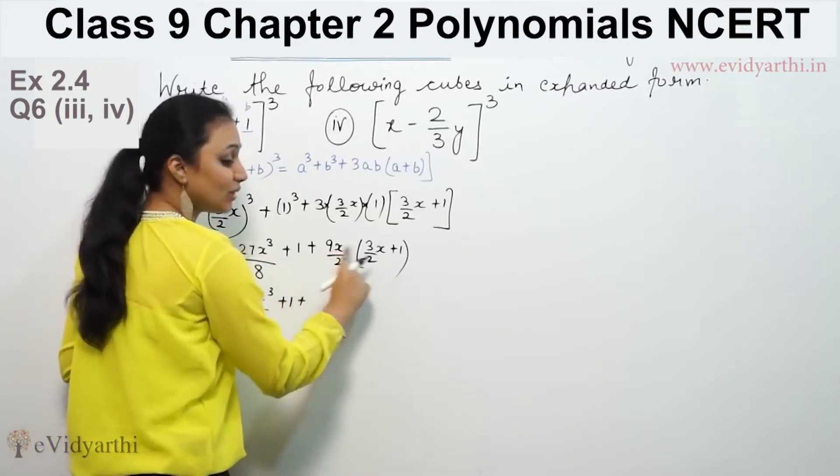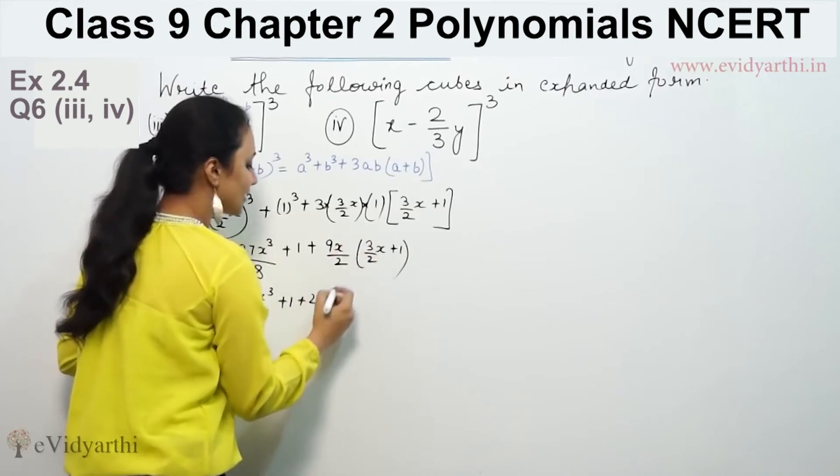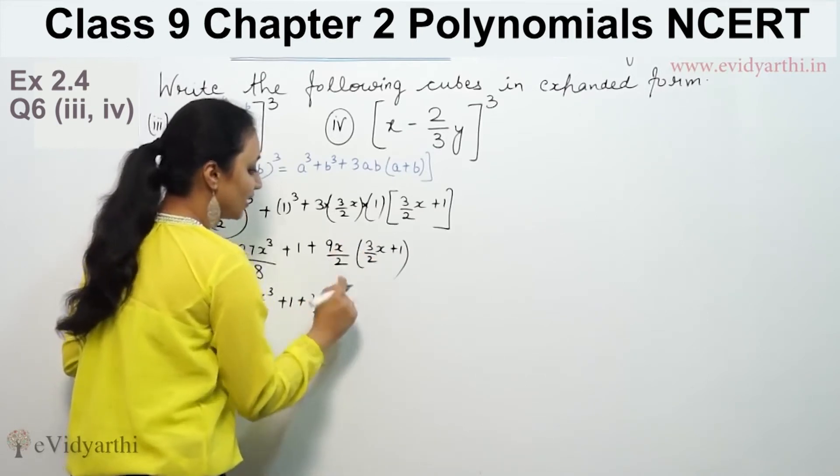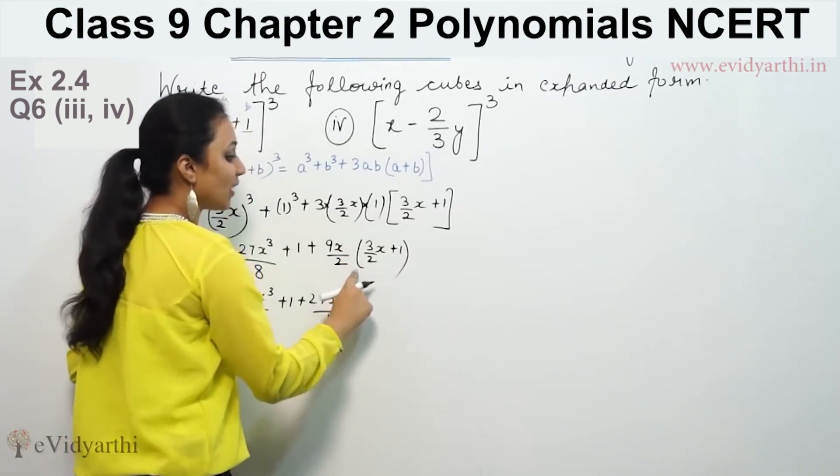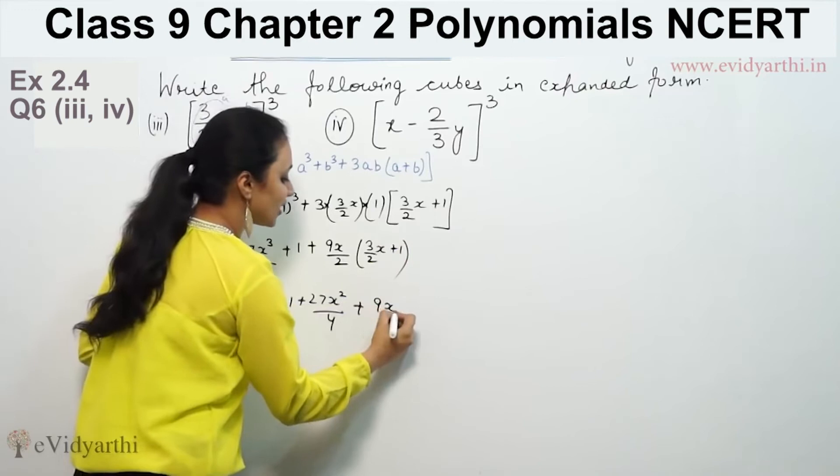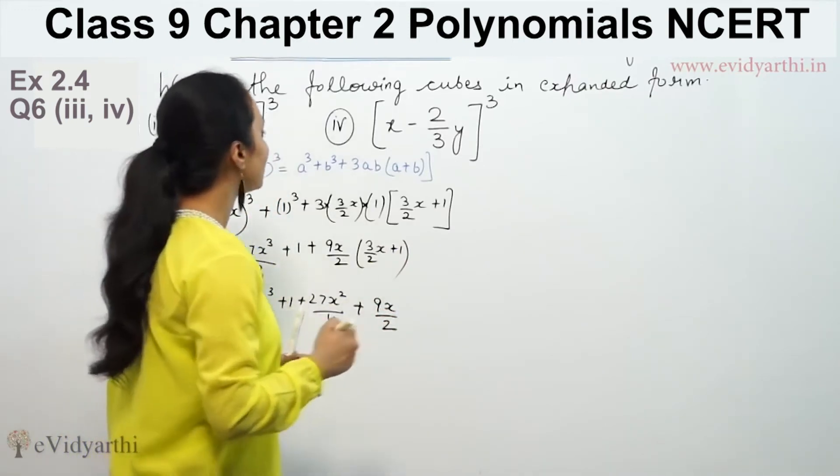So 27x³/8 + 1. We multiply the numerator: 9 × 3 is 27, x times x is x², 2 times 2 is 4. Plus (9x/2) × 1, which gives 9x/2.